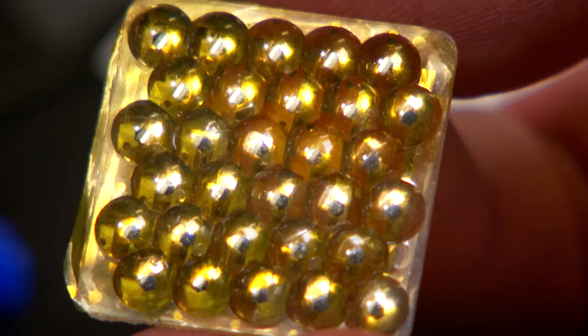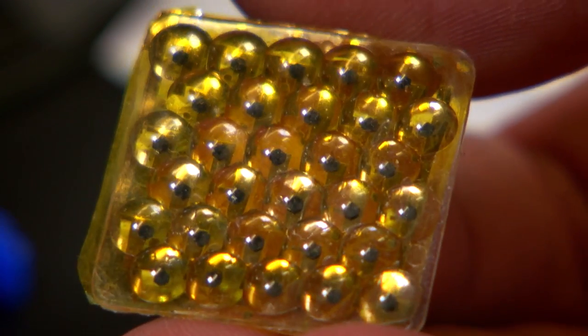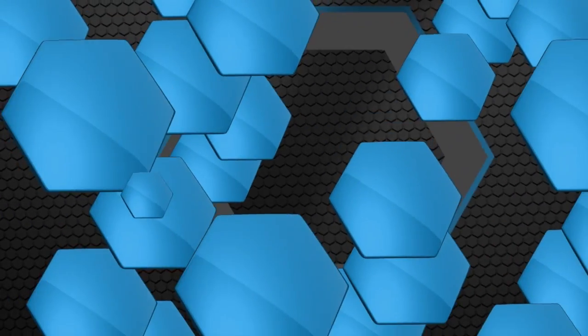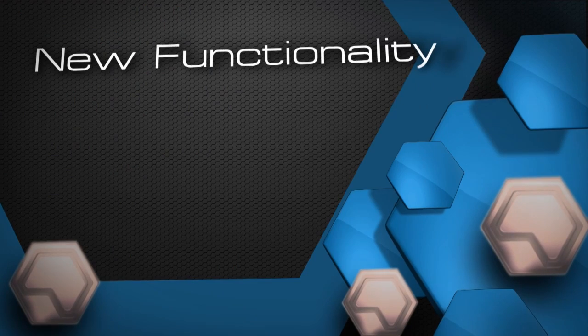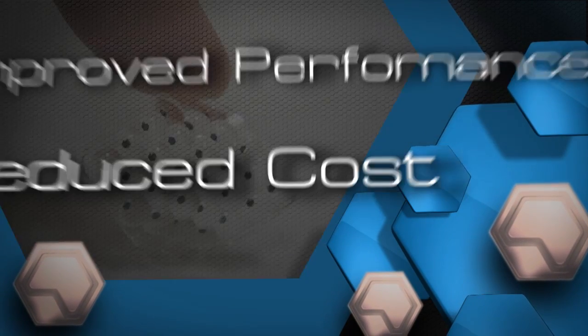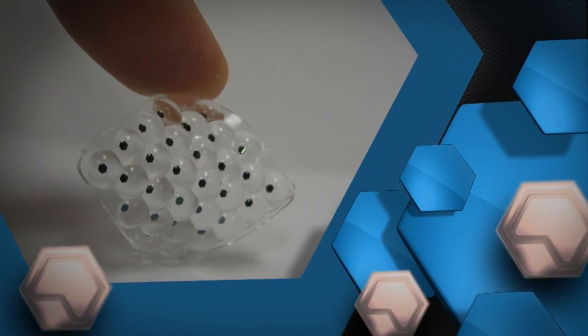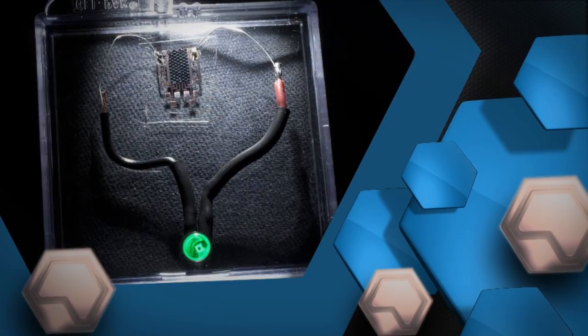Any time you make something very small, whether it's solar cells or an integrated circuit, you should do so because it makes sense. You get a benefit because you get new functionality, improved performance, or reduced cost. What we've discovered is that with the small solar cells, we actually get all three.